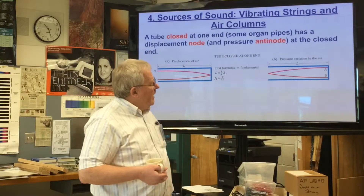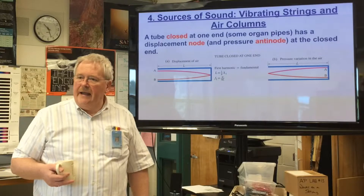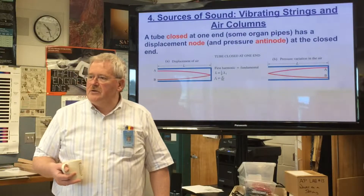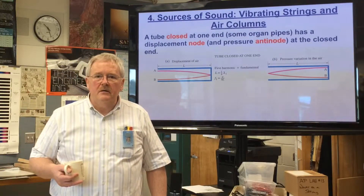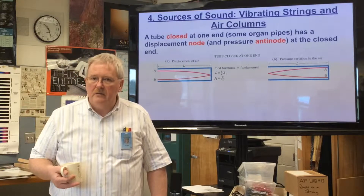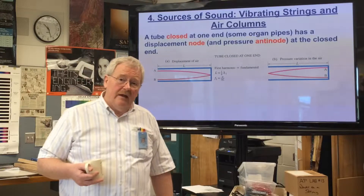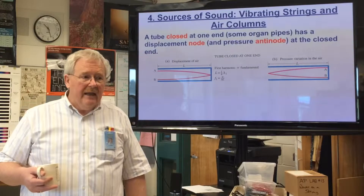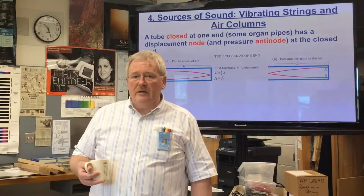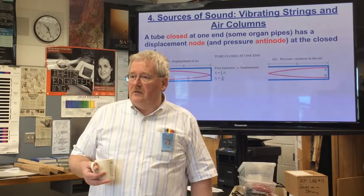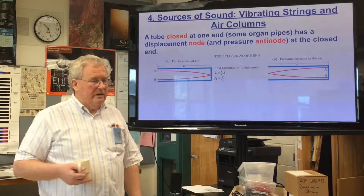For the closed tube, only a quarter of a wavelength fits into the length. So to get the wavelength from the length of the tube, we multiply by 4.